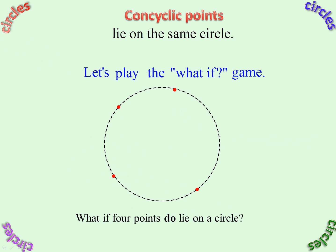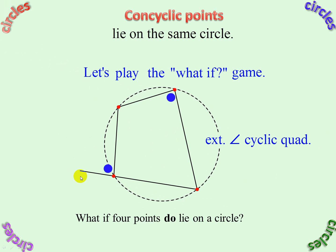And a final one — notice we produced a side there to form the exterior angle, and the exterior angle equals the interior opposite angle. So if there was no circle there but you had a quadrilateral where the exterior angle equaled the interior opposite angle, then this would have to be a cyclic quadrilateral by Converse Exterior Angle Cyclic Quad.